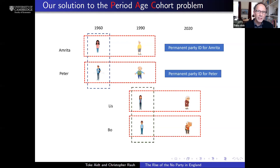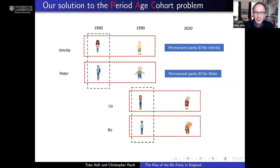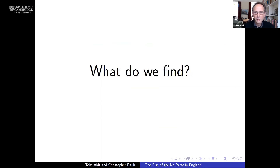That just leaves the cohort effect, and that is the innovation in our research. Observing partisan choices of individuals over time allows us to decompose party identification into a permanent component — which stays with the individual for life — and a life cycle component that changes with age. The permanent component of an individual's identification with a political party contains within it the cohort effect. By averaging across individuals in the same cohort, we can back out the cohort effect and separate the three effects to explain the rise of the no party.